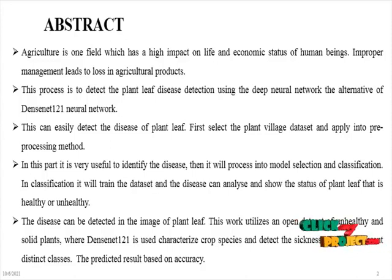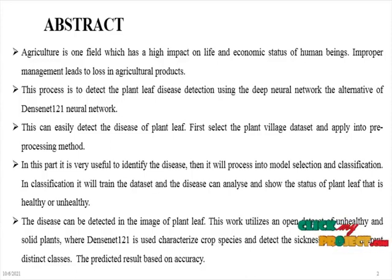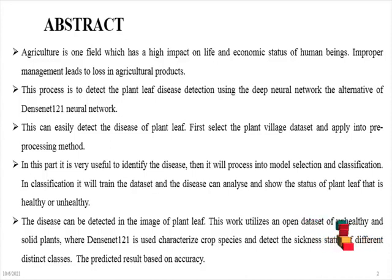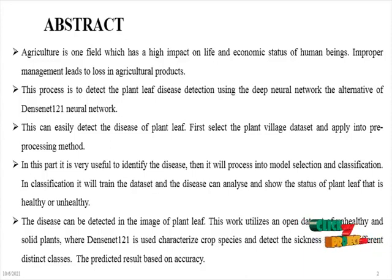The system shows the status of the plant — whether it is healthy or unhealthy. The disease can be detected from the image of the plant. This work utilizes an open dataset of unhealthy and healthy plants, where DenseNet-121 is used to characterize and detect the disease status of different plant classes. It predicts the result based on accuracy.